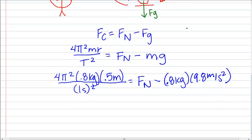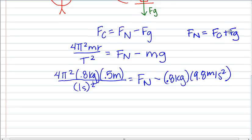Essentially what we would see here is that our force normal is simply going to be our centripetal force plus our force of gravity. When we come down and solve for it, we end up with a normal force equaling 23.63 newtons.